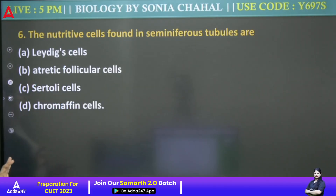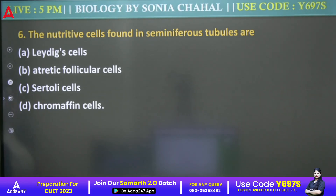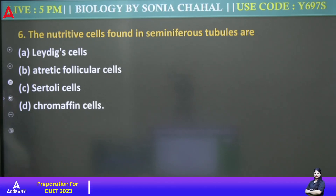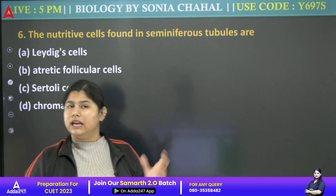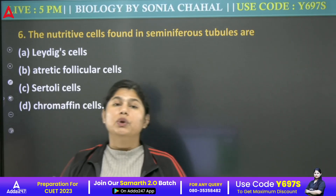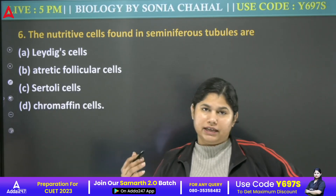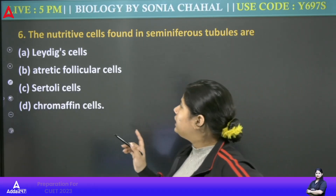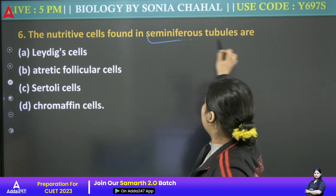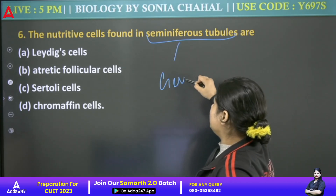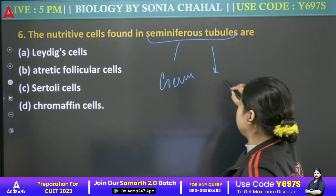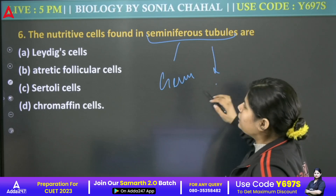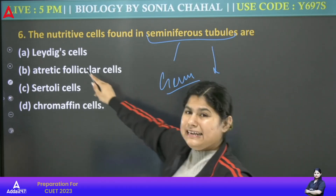Next: The nutritive cells found in seminiferous tubules are — Leydig cells, atretic follicle cells, Sertoli cells, or chromaffin cells? We know that in seminiferous tubules, the nutritive cells are our Sertoli cells, which work for nutrition. There are two types of cells within seminiferous tubules — one is the germ cell, and the other is our nutritive cells, which are Sertoli cells.